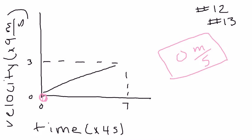For question number 13, what is the final velocity? We see here that it is 3. Times 9 would be 27, and that is your final answer: 27 meters over seconds.